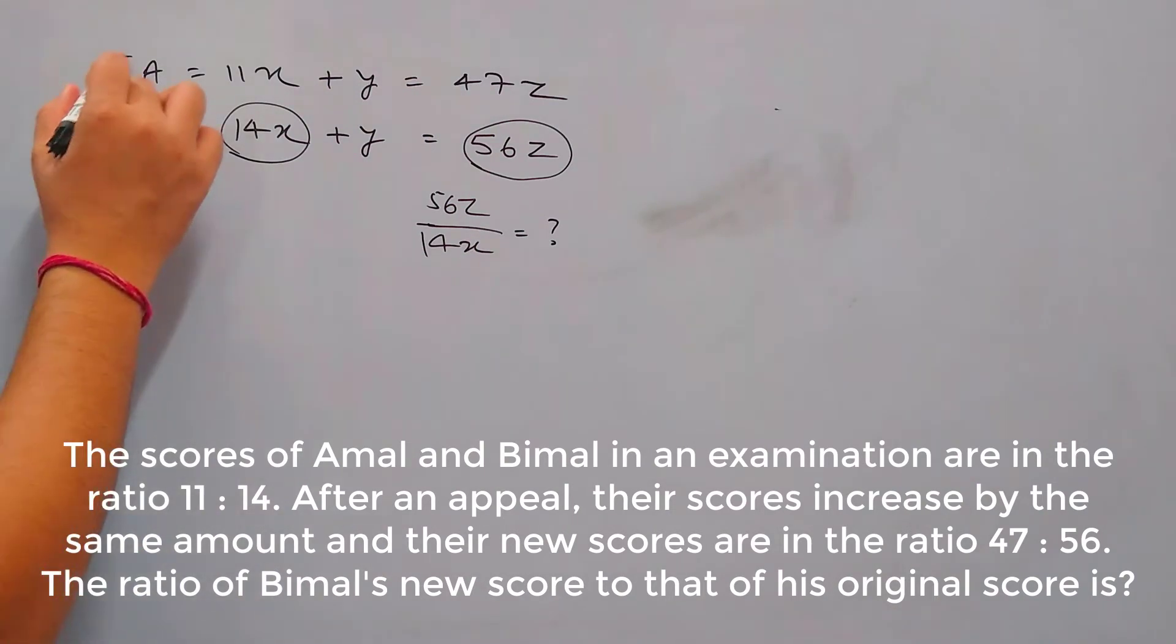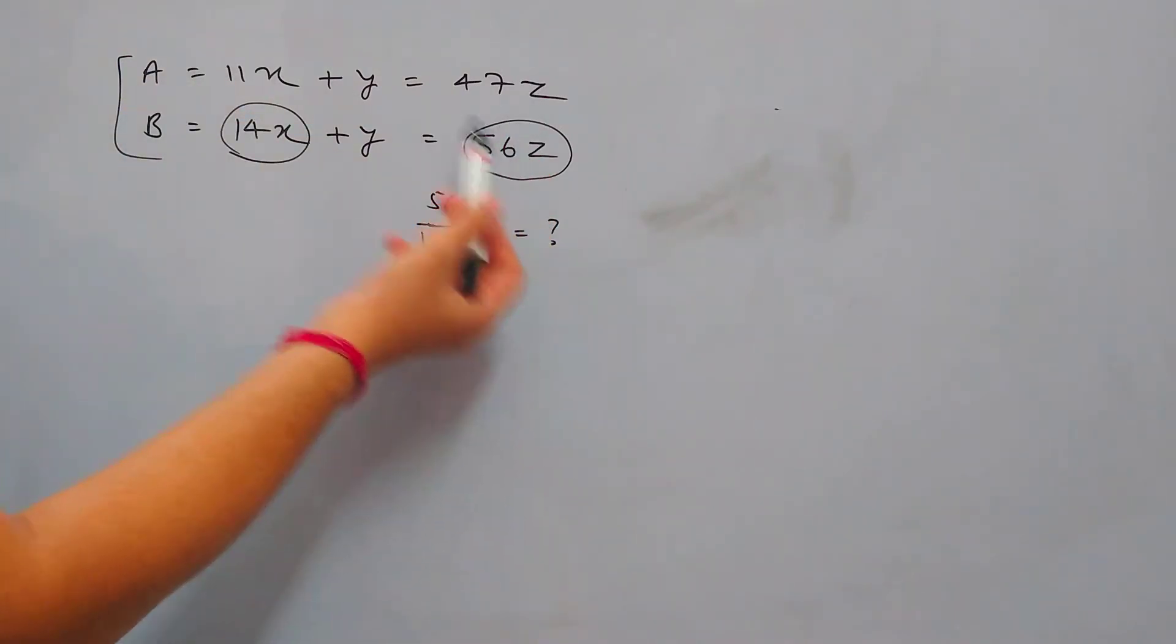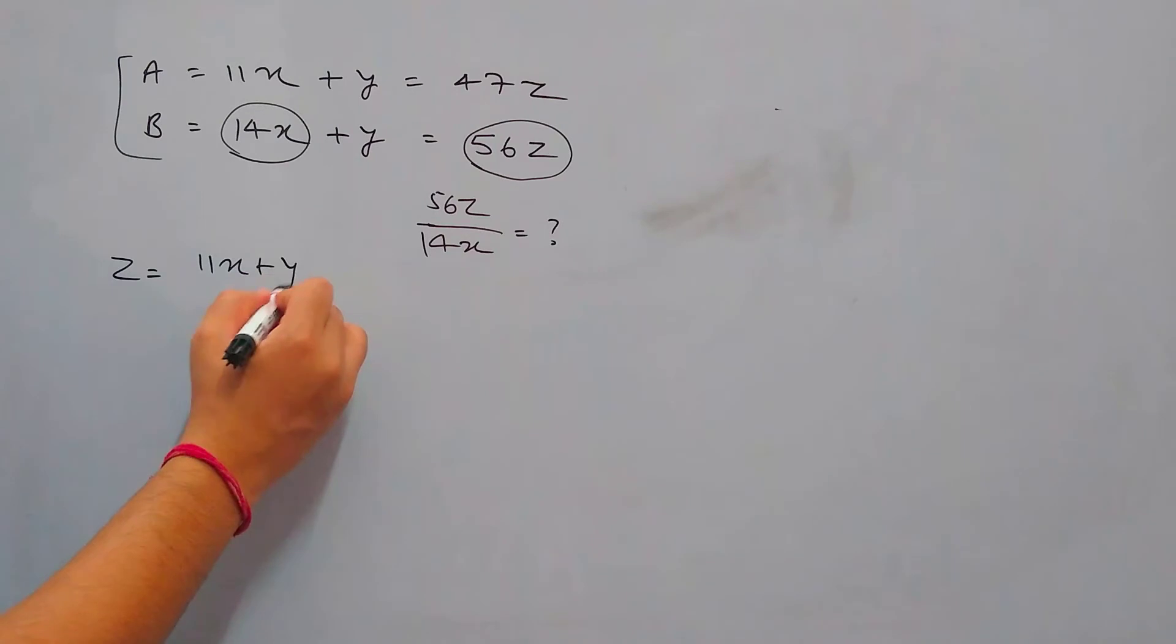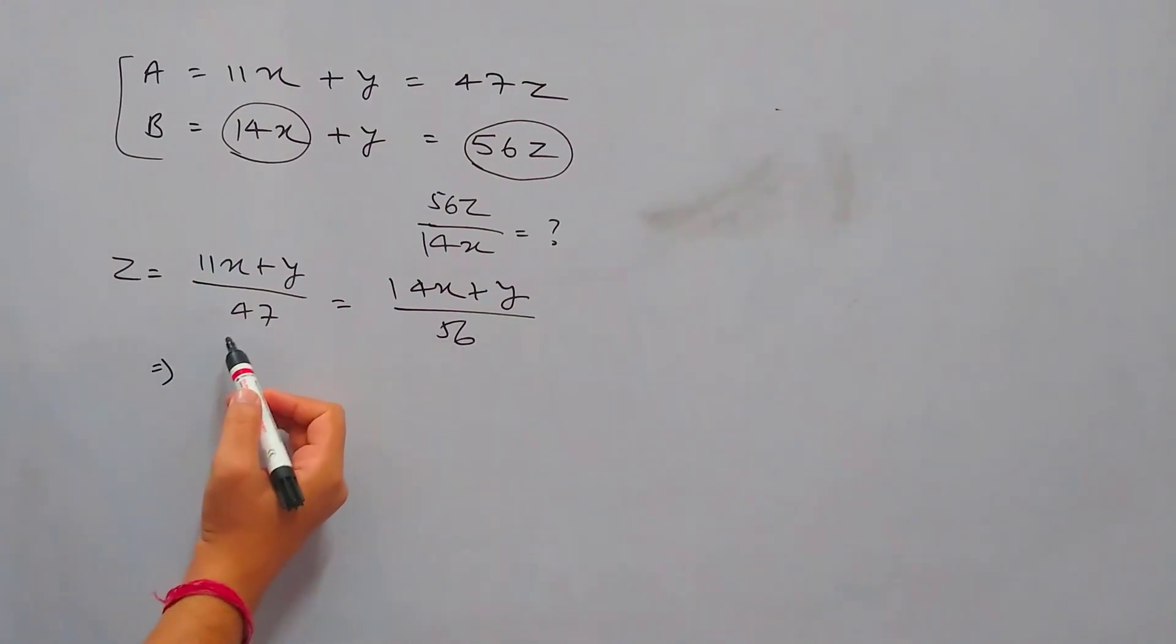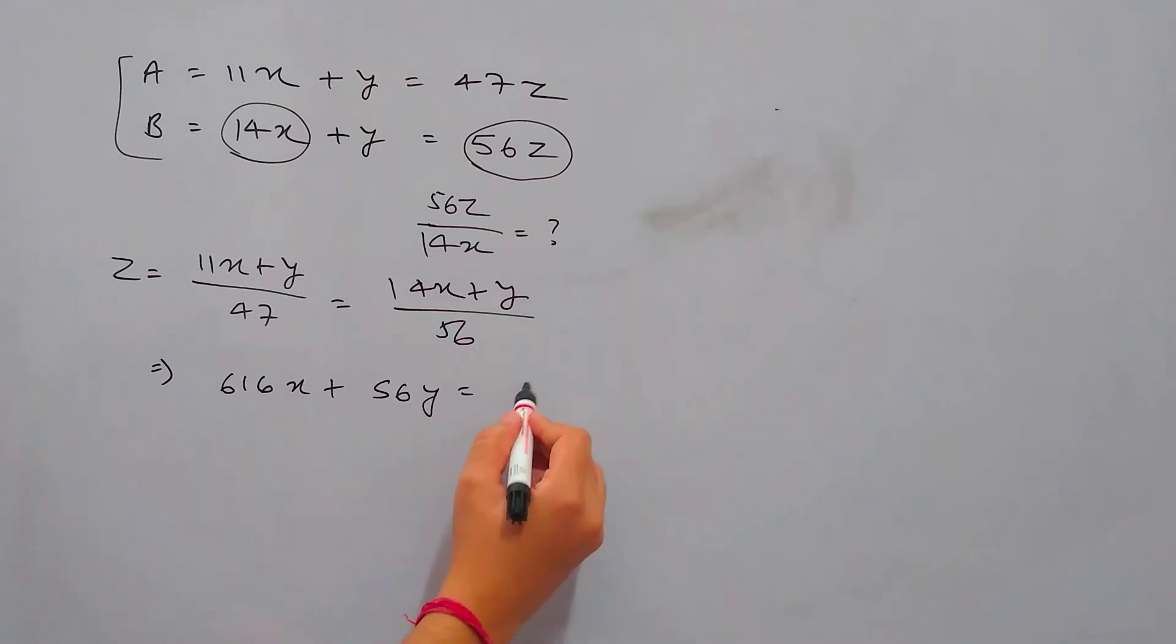So if we see these two equations and compare z from both the equations, then z is 11x plus y by 47 from the first equation and from the second equation this is 14x plus y by 56. So now if we solve this further, 56 times 11 gives 616x plus 56y equals to 658x plus 47y. So if we reduce, 616 minus 658 gives 42x and 56y minus 47y is 9y.